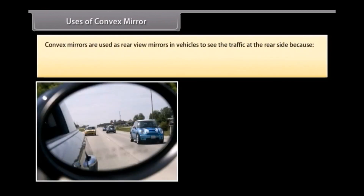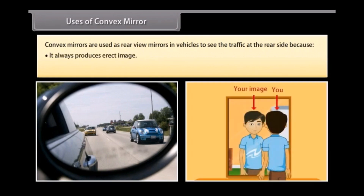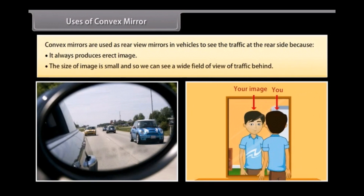Uses of convex mirrors: Convex mirrors are used as rear-view mirrors in vehicles to see traffic at the rear side, because they always produce an erect image, the size of the image is small, and so we can see a wide field of view of traffic behind.